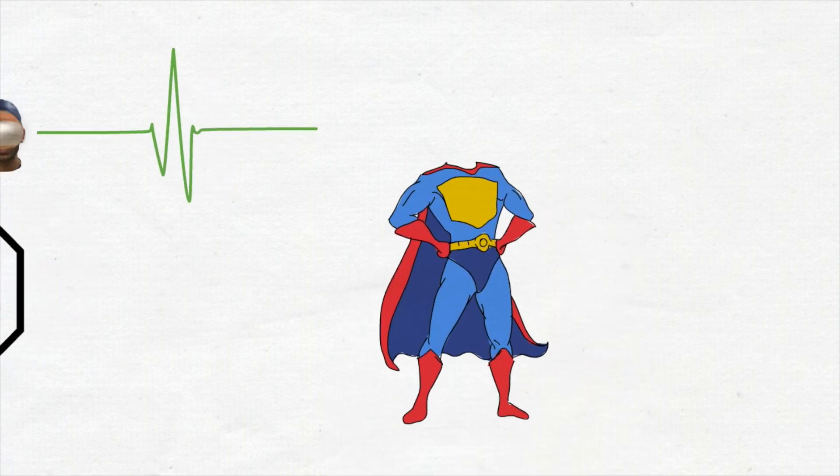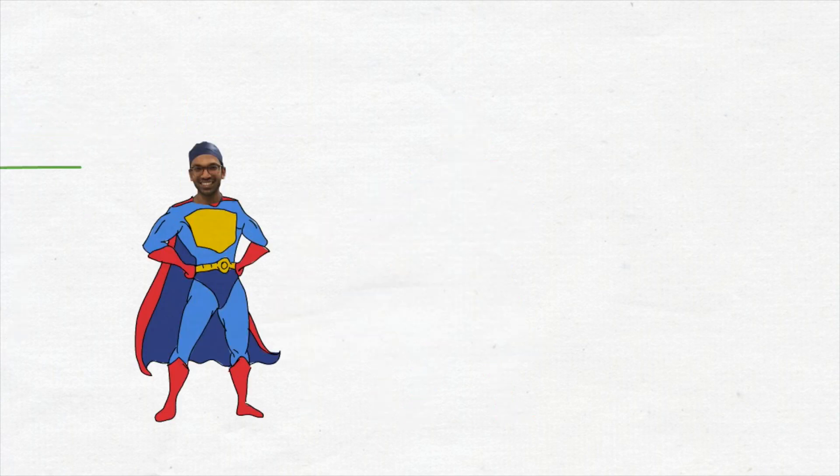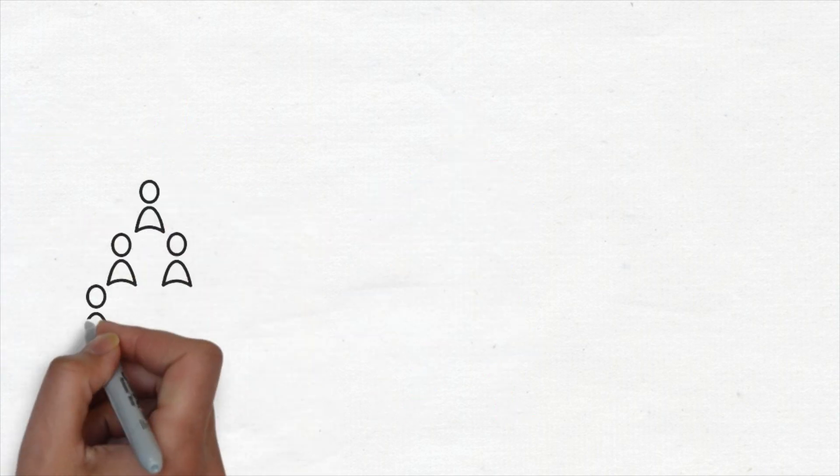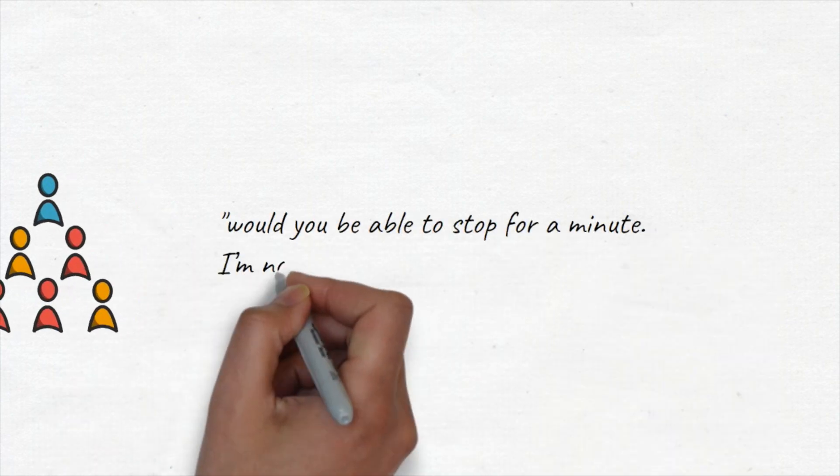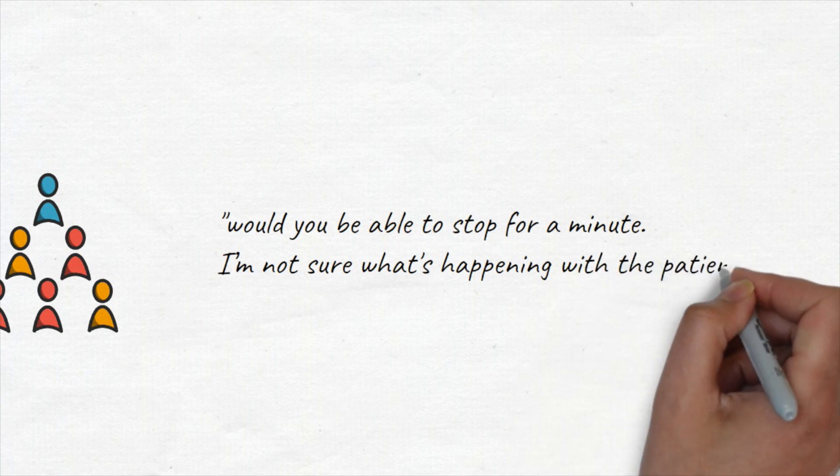The most difficult part of this might actually be getting the confidence to tell a senior surgeon to stop what they're doing. This is difficult due to the hierarchies that exist and learning how to say this is half the battle. I would say something like 'would you be able to stop for a minute? I'm not sure what's happening with the patient and I need to get some assistance.'